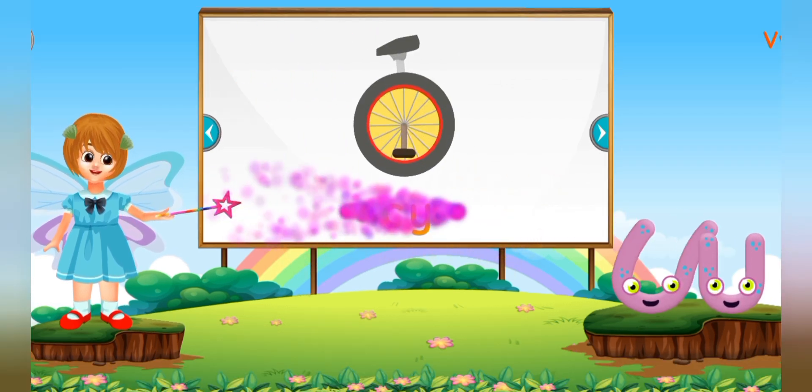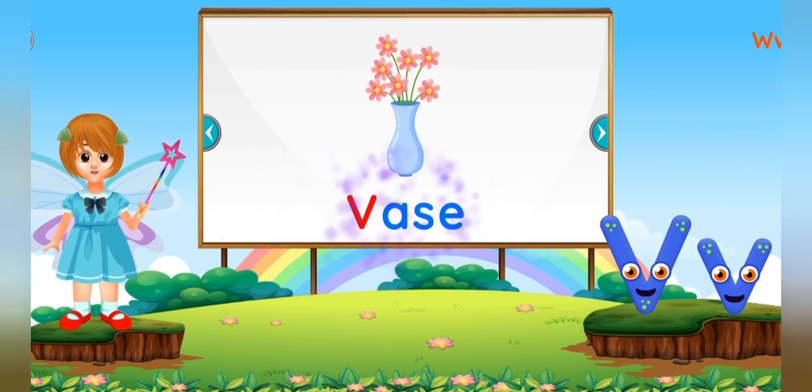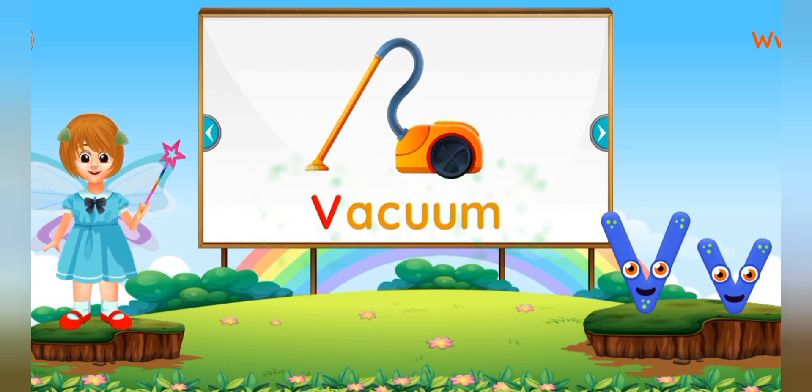U for Unicorn, U for Unicycle. V for Vase, V for Vacuum.